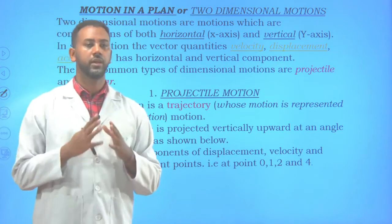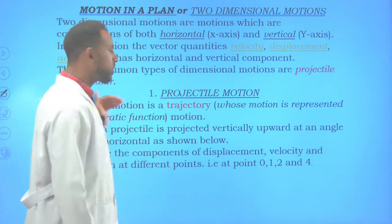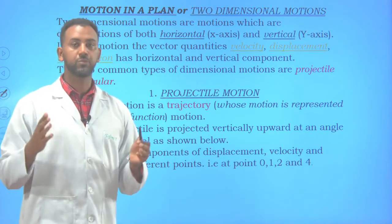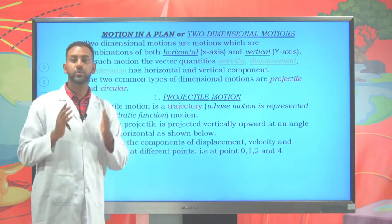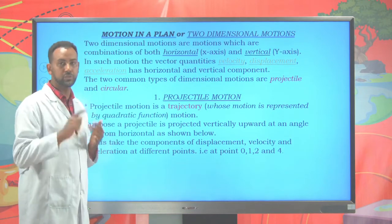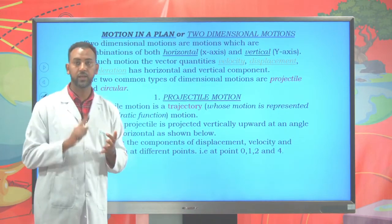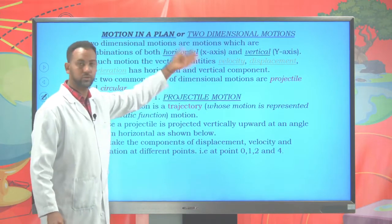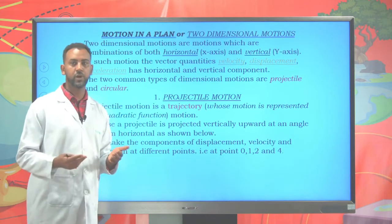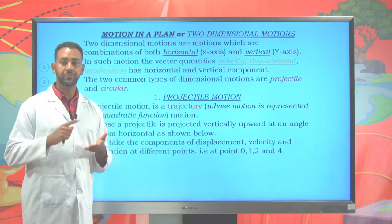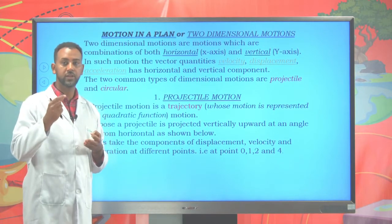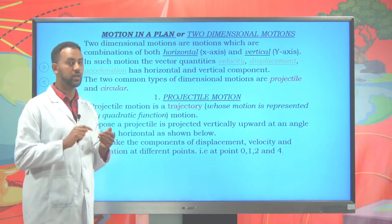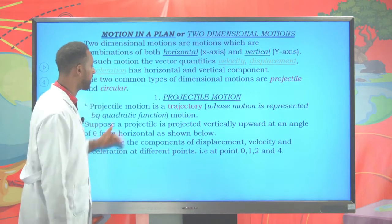Now let's see about motion in a plane, or two-dimensional motion. So far we have seen one-dimensional motion — horizontal or vertical. In two-dimensional motion, the object moves in both directions: it has both horizontal and vertical components. Two-dimensional motion involves motion along the x-axis and the y-axis. All quantities — displacement, velocity, and acceleration — have horizontal and vertical components.